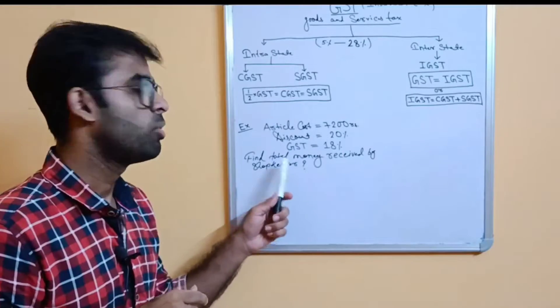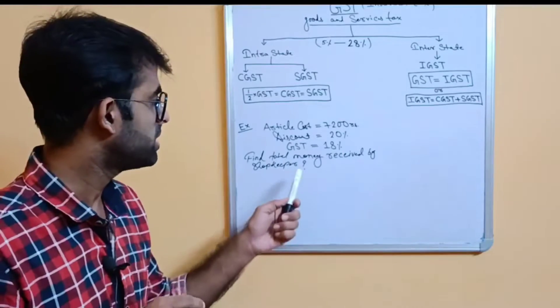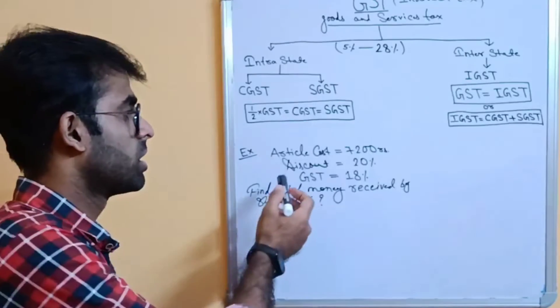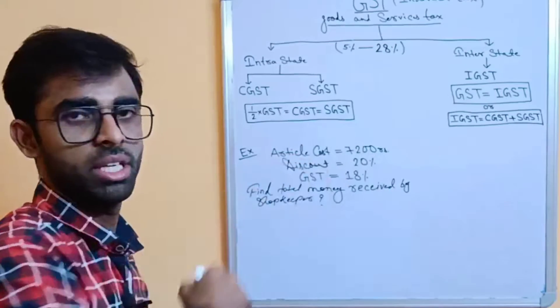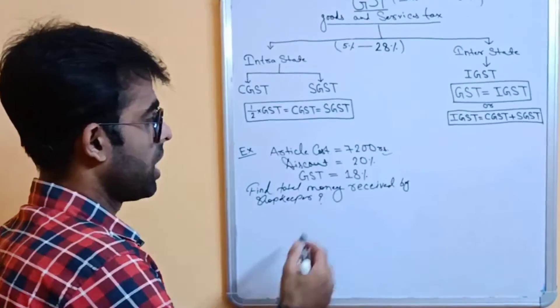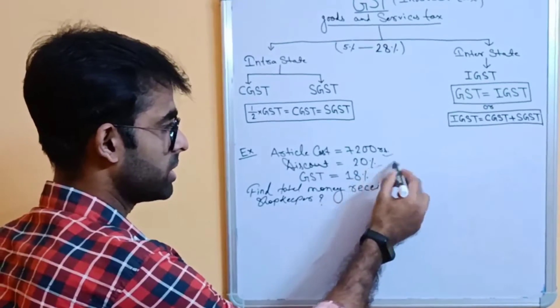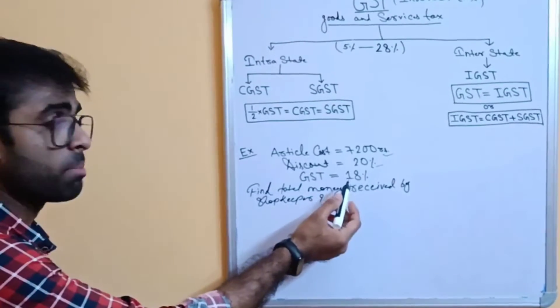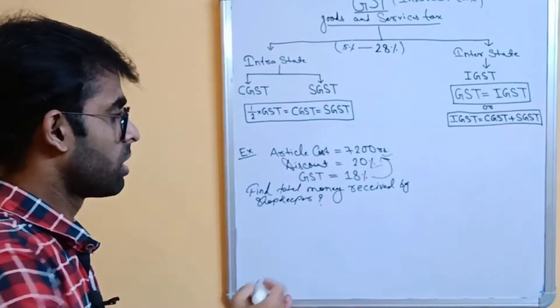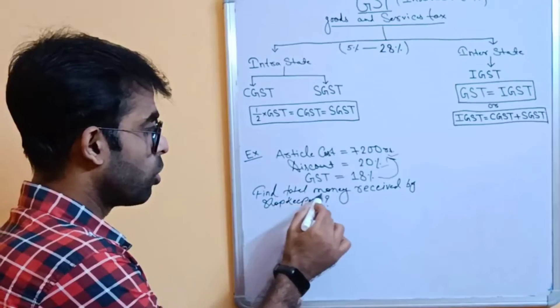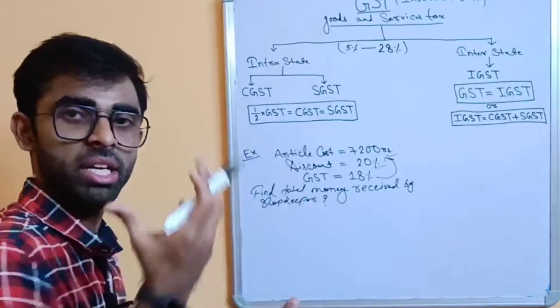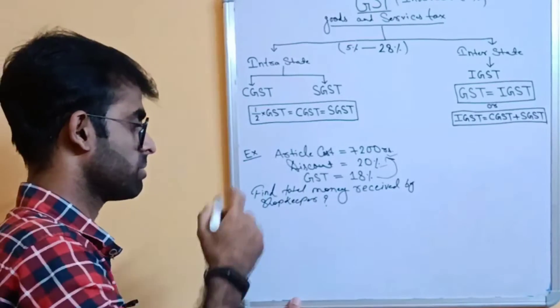Now, if I give you an example, this type of problem you have to solve. What questions will come? Suppose the article cost is given, that is 7200 rupees. And discount is given 20% on this article. And GST is also applicable for this article which is 18%. So, find the total amount received by the shopkeeper.